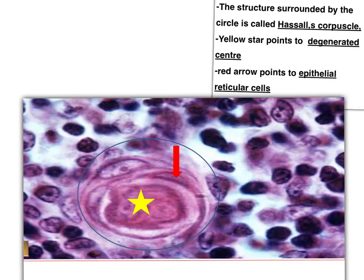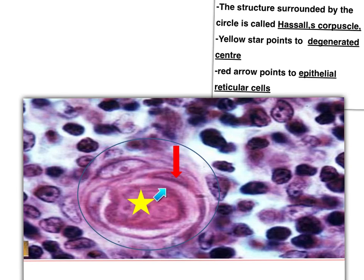This is a picture of the thymus because it has an acidophilic hyaline mass formed by the hyaline degeneration of the epithelial reticular cells present in the thymic medulla. These are concentric layers of epithelial reticular cells — oval cells with oval nuclei having pale chromatin and a prominent nucleolus, surrounded by lymphocytes. The structure surrounded by the circle is called the Hassall corpuscle. The yellow star points to the degenerated material and the red arrow to the epithelial reticular cells forming concentric layers.